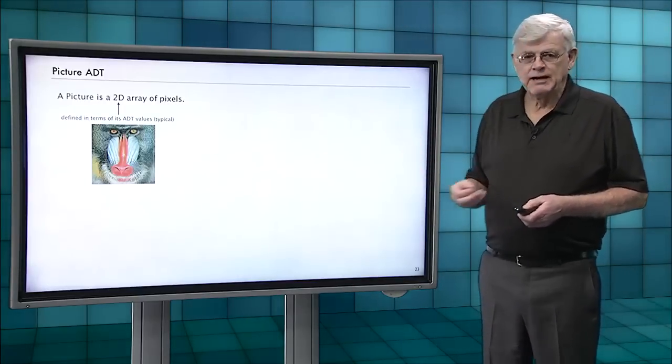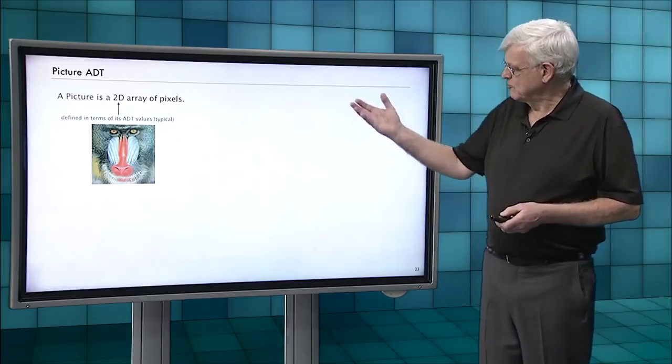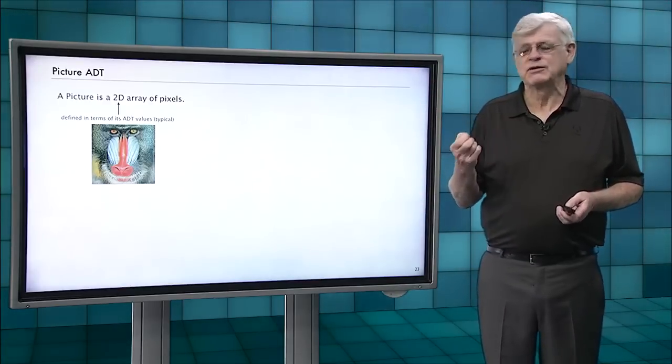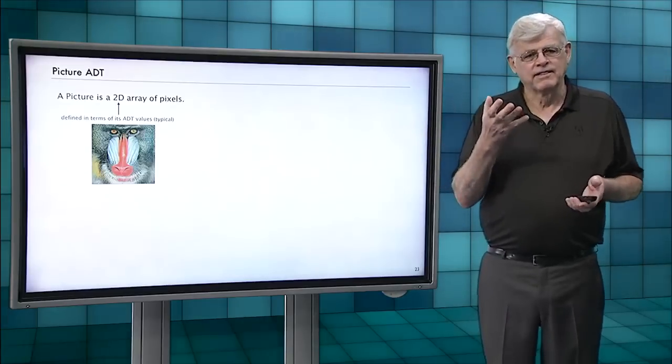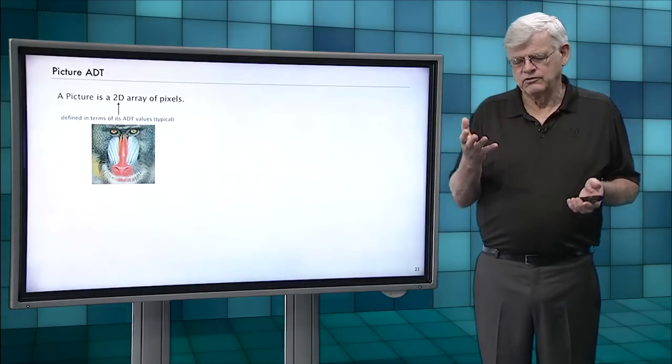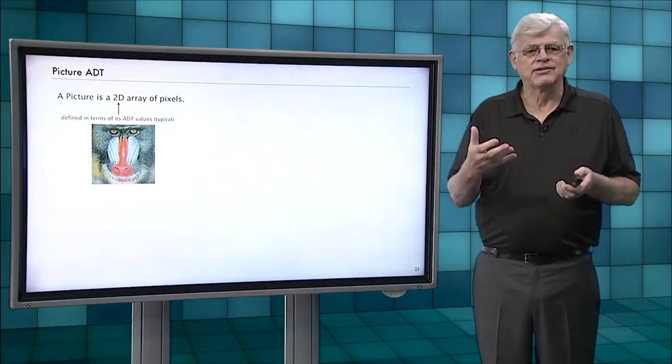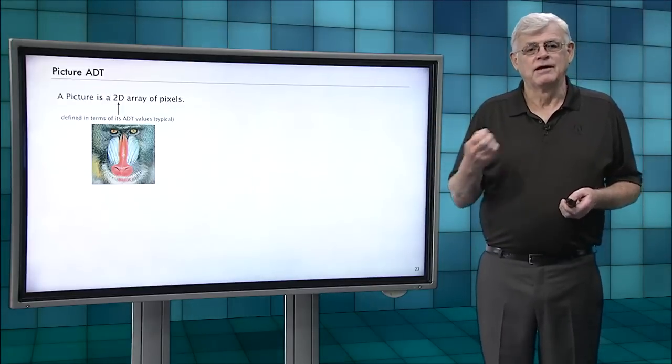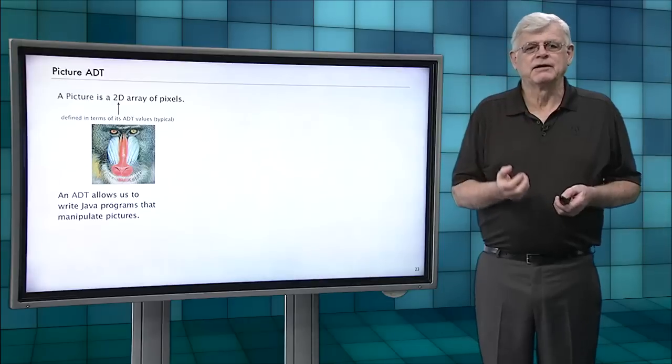So we're going to work with an abstract data type that's called a picture. A picture is a two-dimensional array of pixels. It's defined in terms of its set of values - a set of values is 2D arrays of pixels. And so that's what we think of a picture as being.